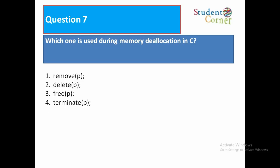Question 7: Which one is used during memory deallocation in C? Option 1: remove(p). Option 2: delete. Option 3: free(p). Option 4: terminate(p). The answer is free(p). Free is the method to deallocate memory allocated by malloc or calloc using dynamic memory allocation.